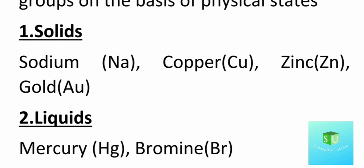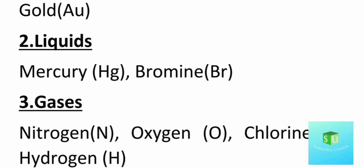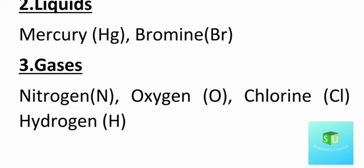The first is solid. Examples of solid elements include sodium, copper, zinc, and gold. In fact, most elements in the periodic table exist in solid form. Next is liquid — examples are mercury and bromine; these two exist in liquid form. The third type is gases, with examples like nitrogen, oxygen, chlorine, and hydrogen — these all exist in the gaseous state.